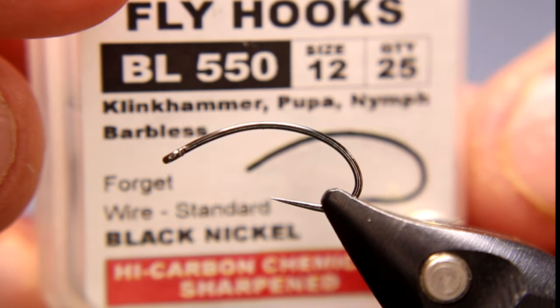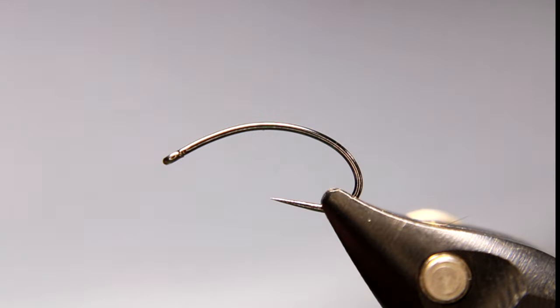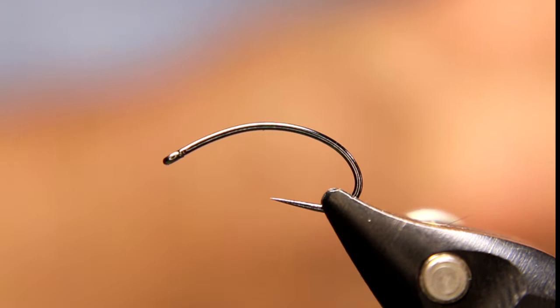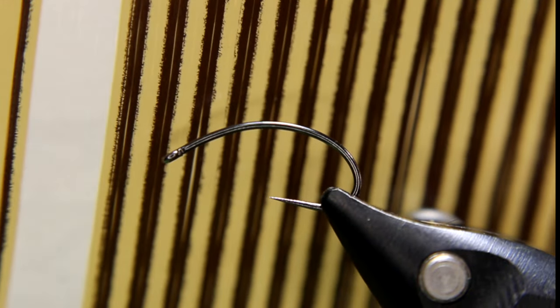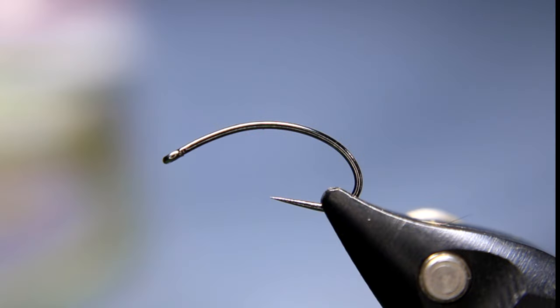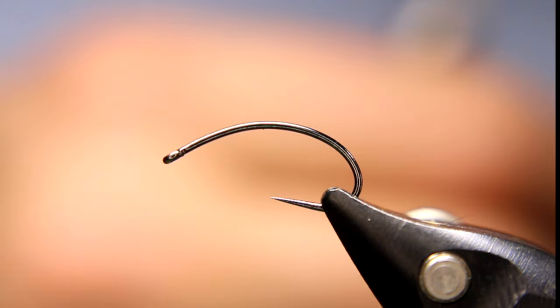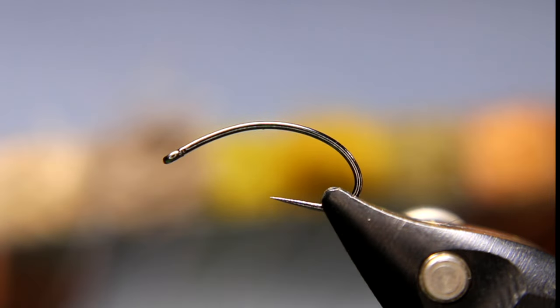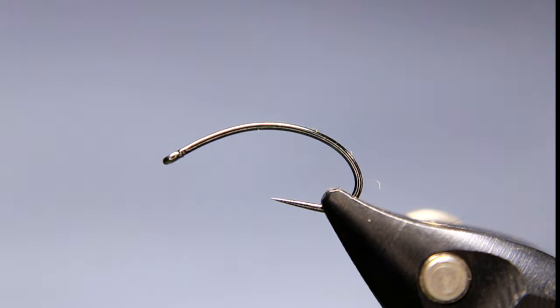In the vice today we have a Hends BL550 clink hammer hook. Love this clink hammer hook for emergers. I'm going to be using some black Semperfli Nano Silk in 12/0, some Hends mayfly body material that's rubberized, some Hends CDC in an olive green brown, and the Hends hard dubbing in number 11, this green one.